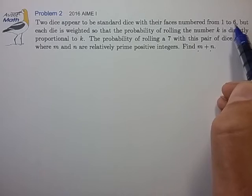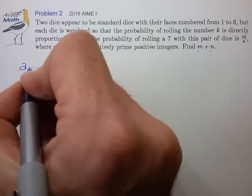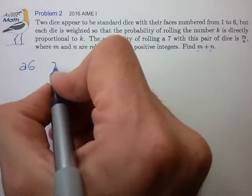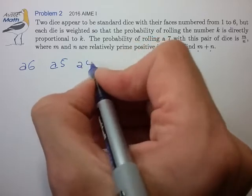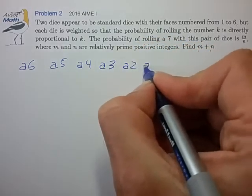So the probabilities of the different faces can be written in terms of a proportionality constant A times 6 for rolling the face 6, A times 5 for rolling a 5, rolling a 4, 3, 2, and a 1.